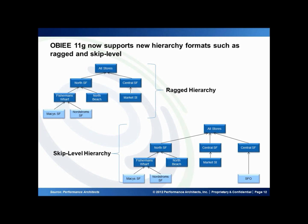A skip-level hierarchy is another feature 11G supports — similar to ragged, except what may be missing is an intermediate node. In the Central SF example, it drills directly to SFO instead of going through the level in between store and region. In previous versions of OBIE, these hierarchy types could exist in data sets, but when drilling in the tool it performed a workaround by adding additional columns instead of drilling nicely. That has been fixed in 11G, and it's really something people have taken to.